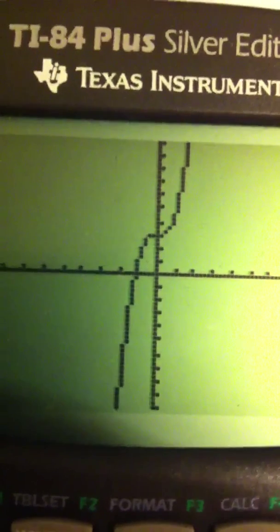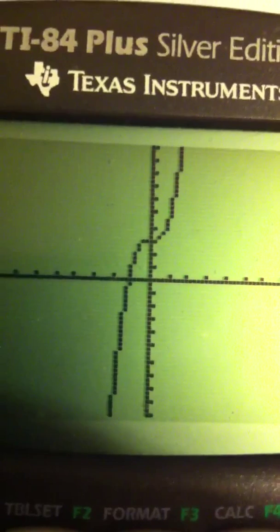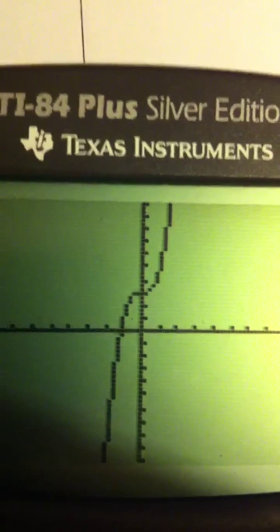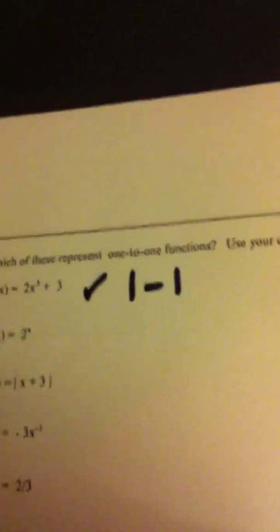How about, does it pass the horizontal line test? Meaning, every time you draw a horizontal line, it only touches it one time? Absolutely. So, what I know about this function is, yes, it is one-to-one.